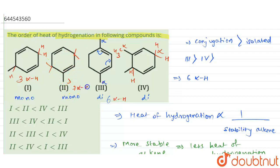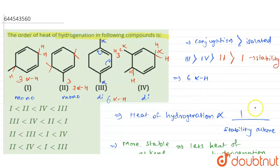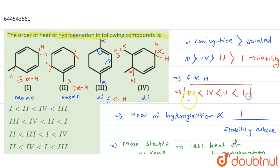Compound 2 has seven alpha hydrogen atoms, so it is more stable than compound 1. Therefore, the stability order is 3 > 4 > 2 > 1. Since heat of hydrogenation is the inverse of stability, the heat of hydrogenation order is 1 > 2 > 4 > 3, with maximum heat of hydrogenation for compound 1 and minimum for compound 3.